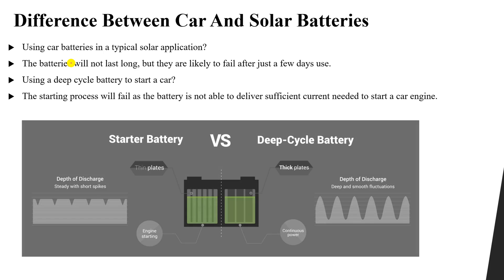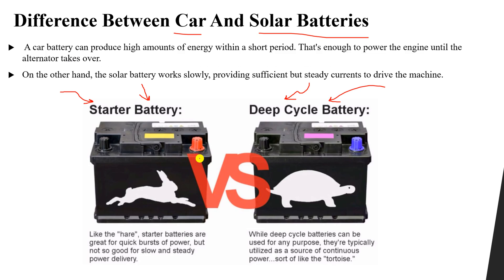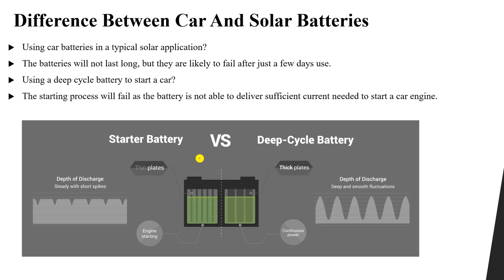Now let's look at the internal difference between these two batteries. On the outside they look the same and you cannot differentiate between them. However, if you open these two batteries, you will find that the starter battery or car battery is formed of thin lead plates inside, while the deep cycle solar battery is formed of thick plates.